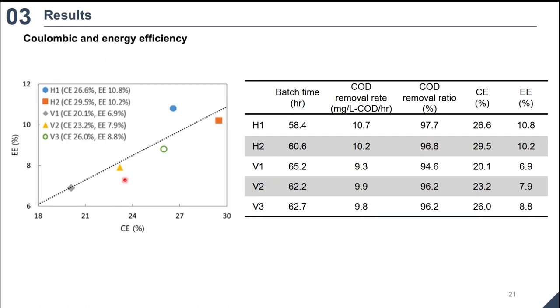Coulombic efficiency and energy efficiency measured to investigate the effect of different anode configuration on coulombic and energy recovery efficiencies. The H-type cells showed relatively higher coulombic efficiency, energy efficiency and COD removal rate and shorter batch time than those of the V-type cells. On average, coulombic efficiency was 25.1 percent, energy efficiency was 8.9 percent, COD removal rate was 10.0 mg per liter COD per hour, COD removal ratio was 96.3 percent and batch time was 61.8 hour.